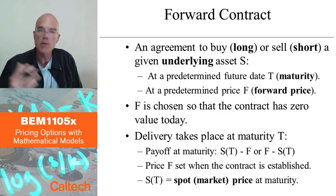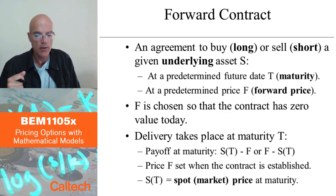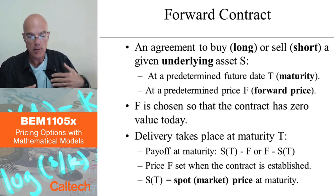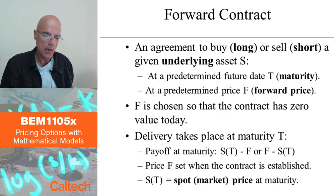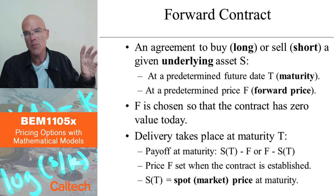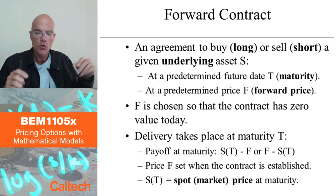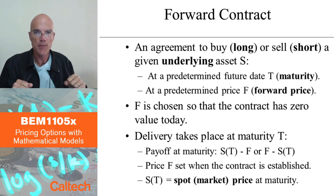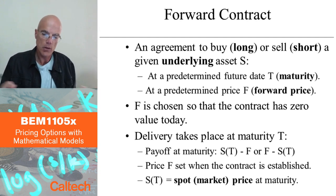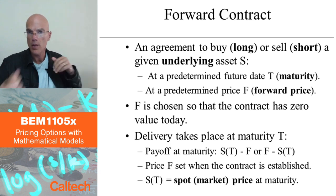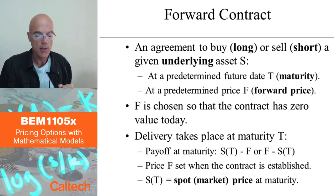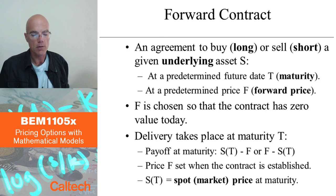It's kind of a zero-sum game in game theory language, meaning that my loss is your profit and your loss is my profit. Because it's a zero-sum game, this forward price F can be chosen so that today the fair value of the contract is zero. With a forward contract, you don't exchange money with your counterparty at time zero — the only money exchanged is at the very end, which is capital F, the forward price. Nothing is paid at the beginning, only at maturity. It's going to be different with options, as we will see.